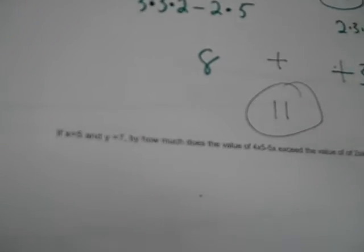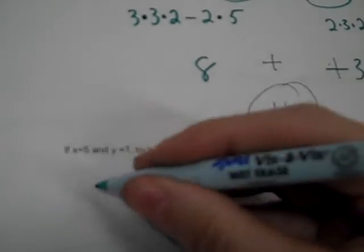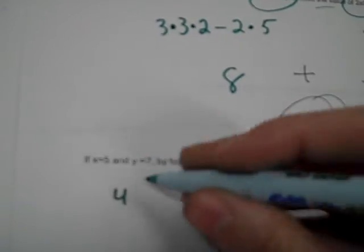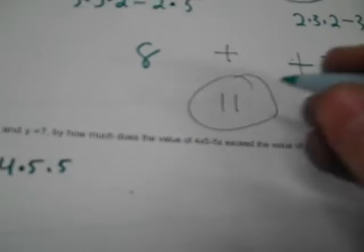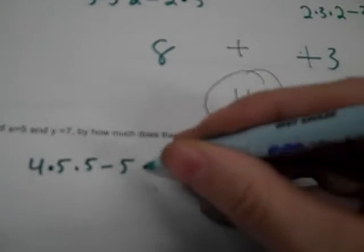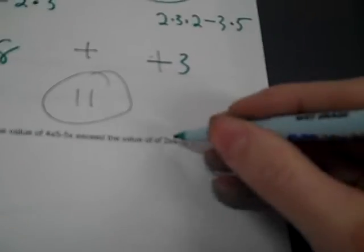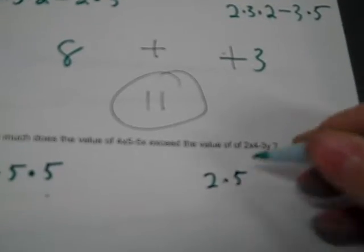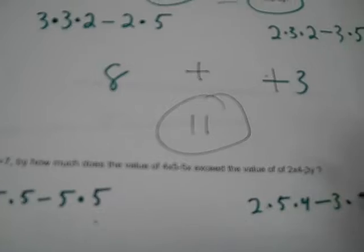And the next one, x equals 5, y equals 7. By how much does the value of 4x5 minus 5x exceed the value of 2x4 minus 3y? So let's replace the variable. We've got 4x, and then x is 5, so times 5, and then 5 times 5, and then a minus sign. There are no negatives in this problem unless I end up with one. Times, and then the x is 5.